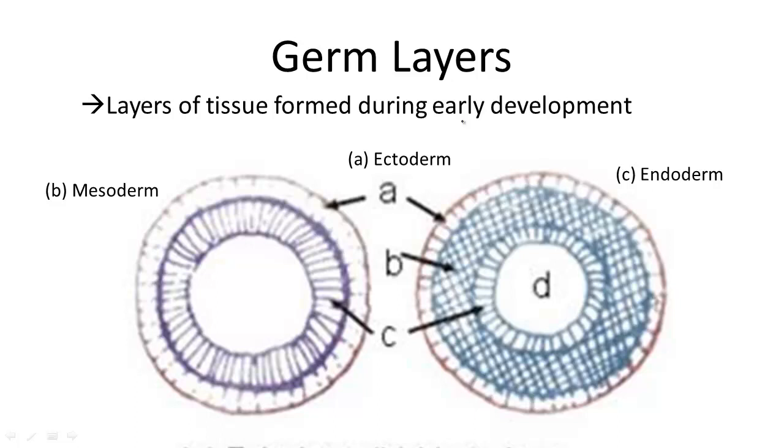The main three layers you should know about in biology are the ectoderm, the endoderm, and the mesoderm. Let's go through each.